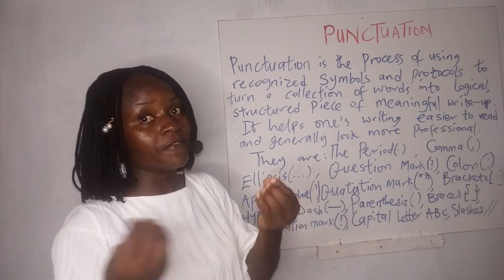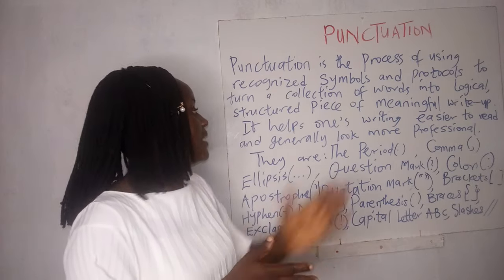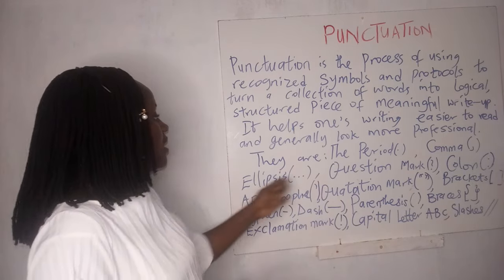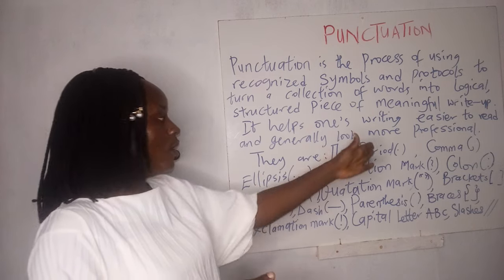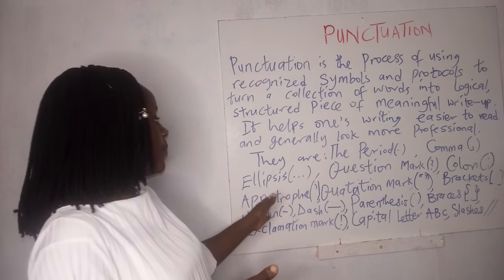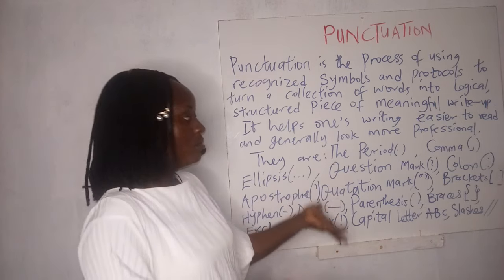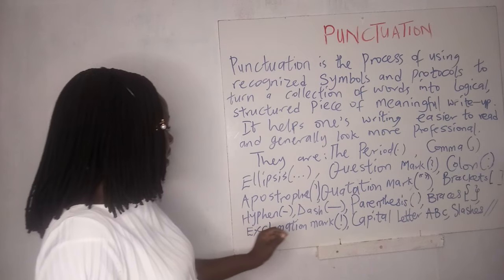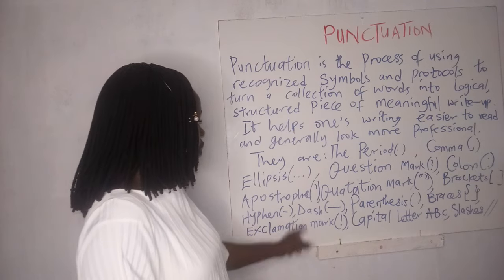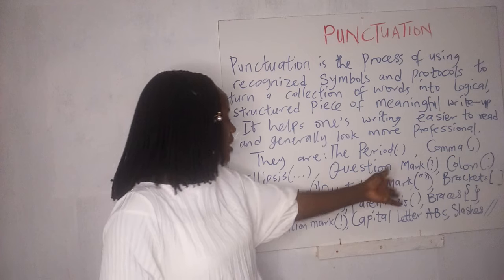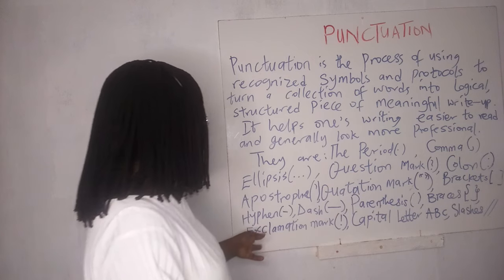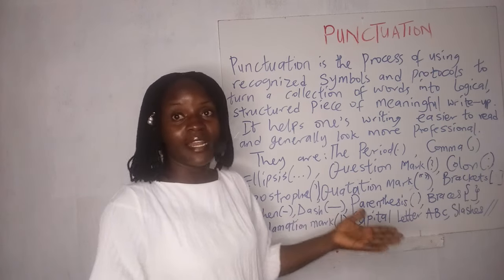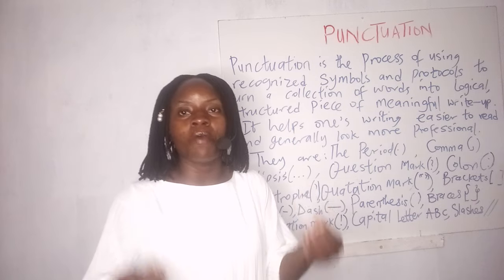Now we have the period, also known as the full stop; the comma; the ellipsis; the question mark; the colon; the apostrophe; the quotation mark; brackets; the hyphen; the dash; parentheses; braces; the exclamation mark; the capital letter; and the slashes. Now what are the uses of each of these punctuation marks?